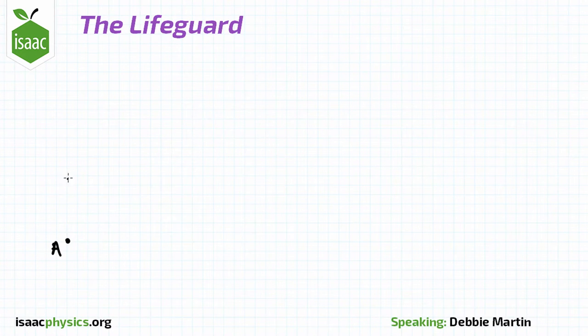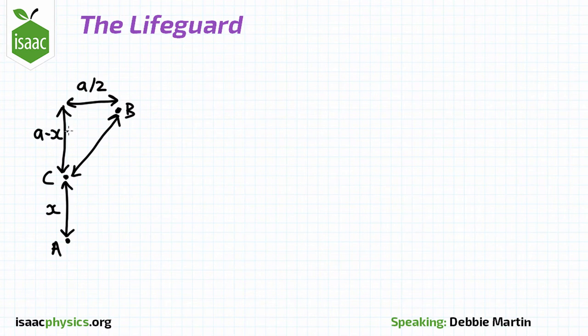Now, the lifeguard runs along the shore to point C, an arbitrary distance X from point A. She then swims out from point C to point B, which is still a distance A over 2 from the shore. The distance along the shore from point C to a point horizontal to B will be A minus X, since our total distance along the shore is still A.